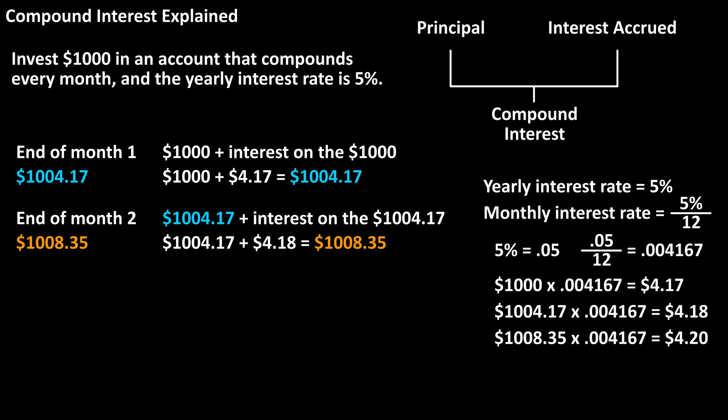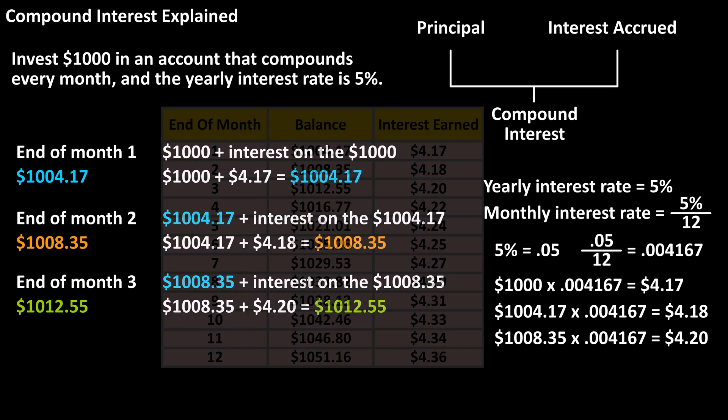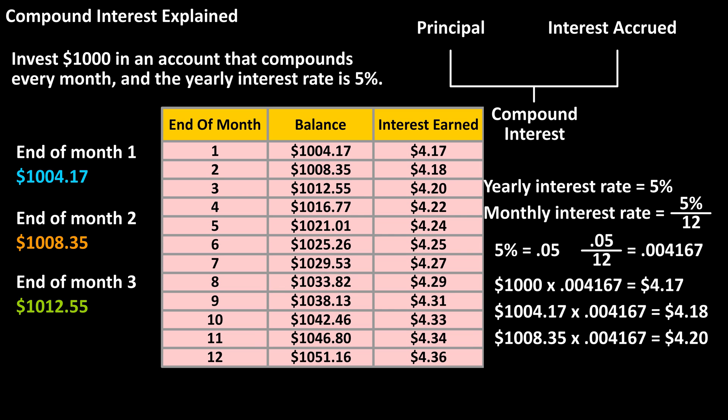So $1,008.35 will be in the account. After month three, the interest payment will be $4.20 and the account will have $1,012.55 in it. Here is a chart that shows month by month the interest paid and the total in the account after the interest payment. So after one year of a $1,000 investment, the account has $1,051.16 in it, making $51.16 in interest — and you can see the interest payments keep increasing.